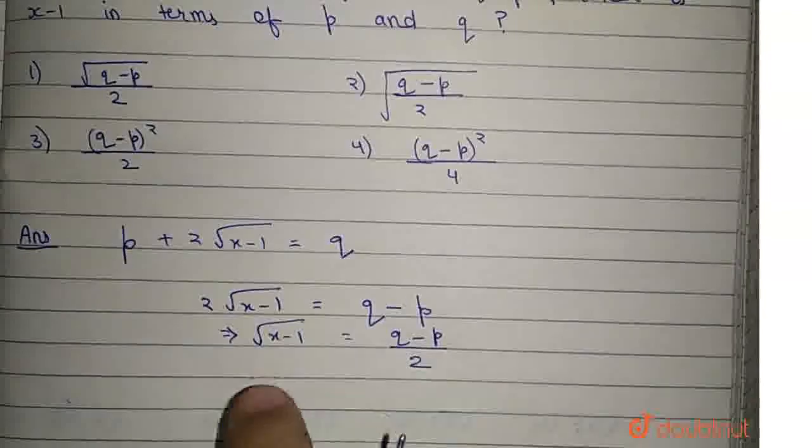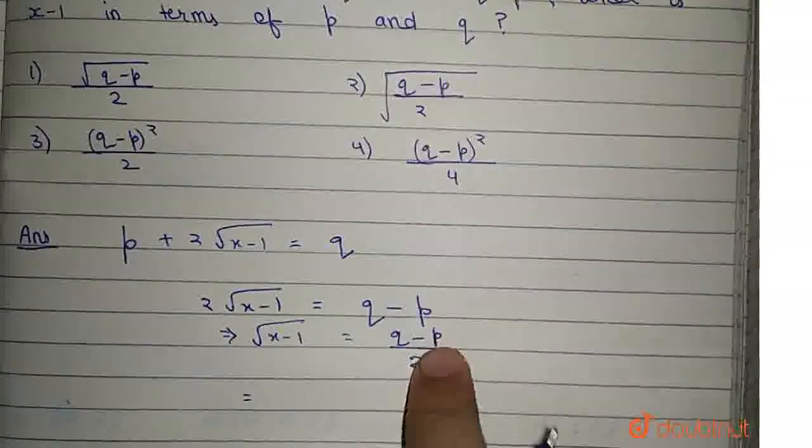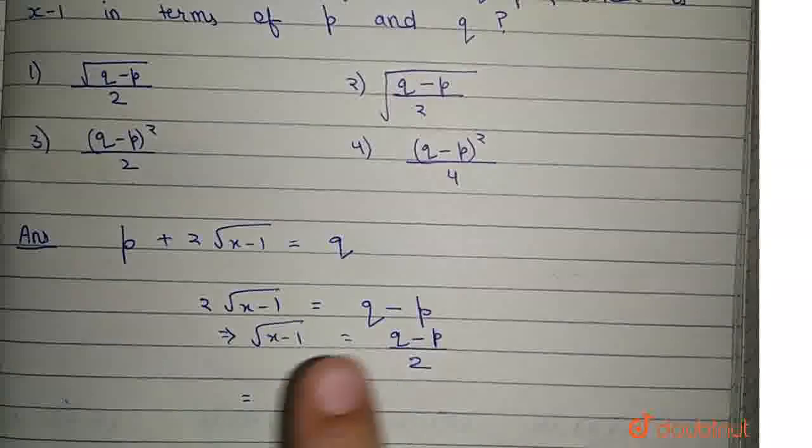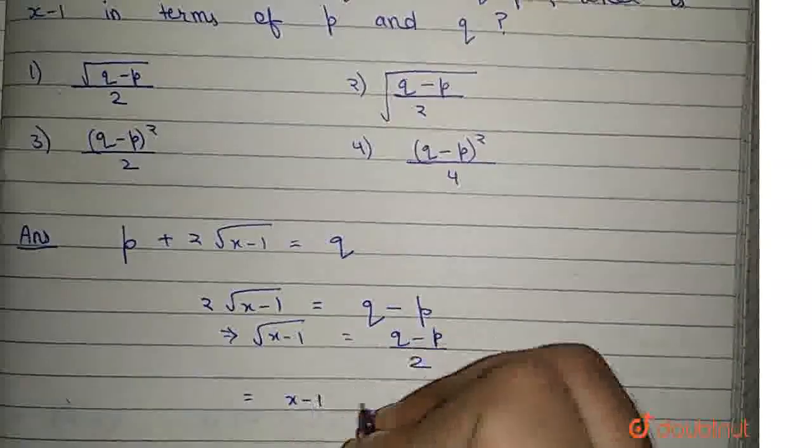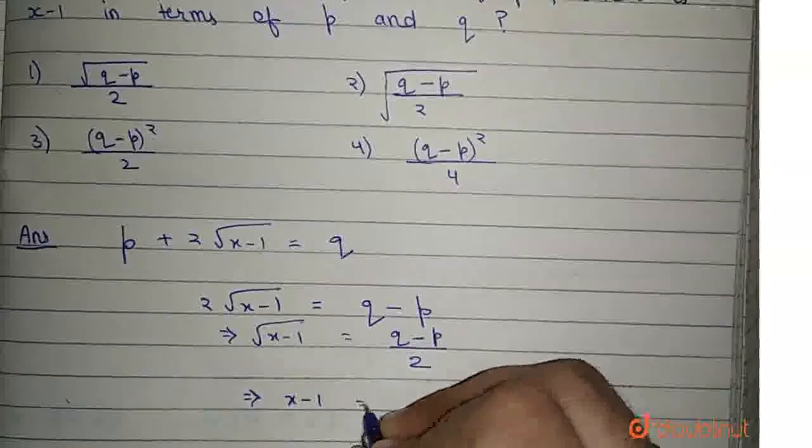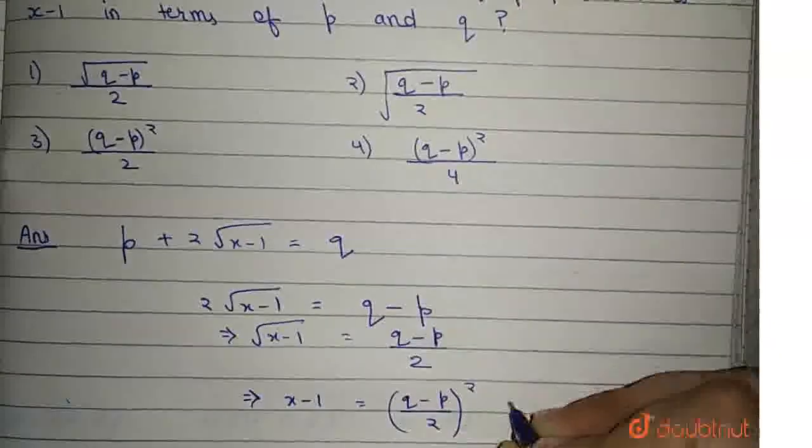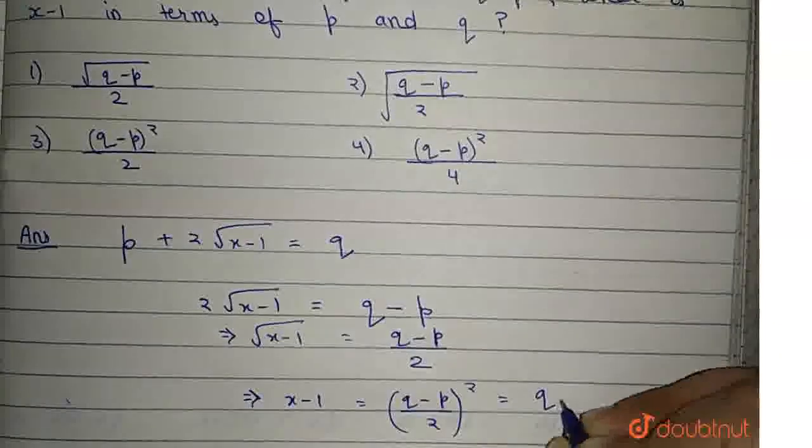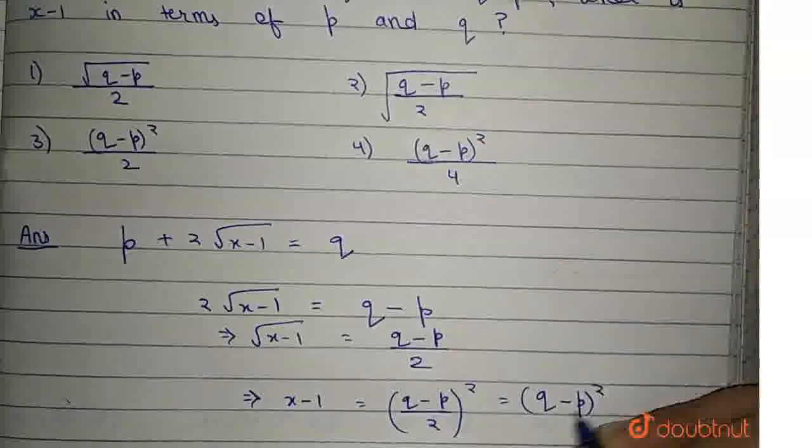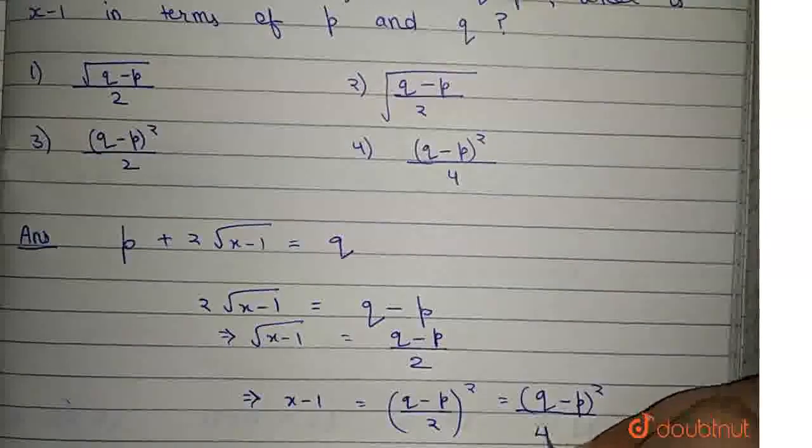Now, squaring both sides, x minus 1 equals (q minus p) divided by 2, squared, which can be written as (q minus p) squared over 2 squared, which is equal to 4.